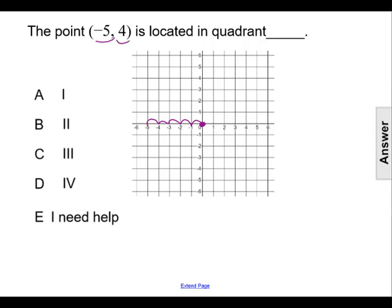and the second number, 4, tells us to go up 1, 2, 3, 4 units. So the point (-5, 4) is located there on the graph.